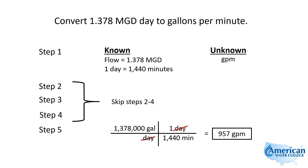So when we divide that out, we come up with 957 gallons per minute.